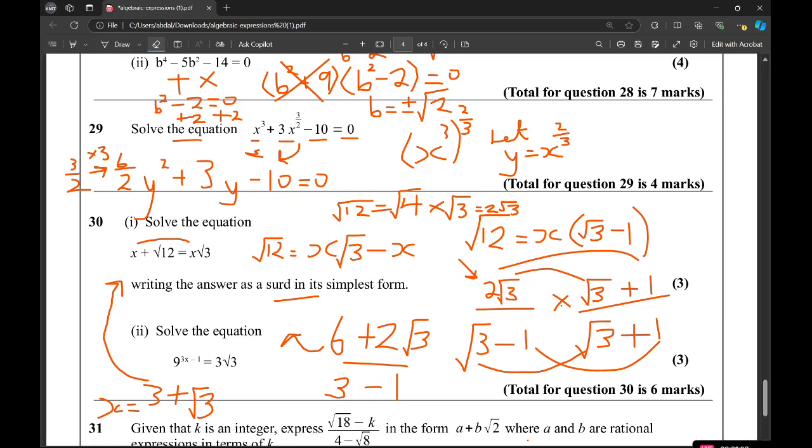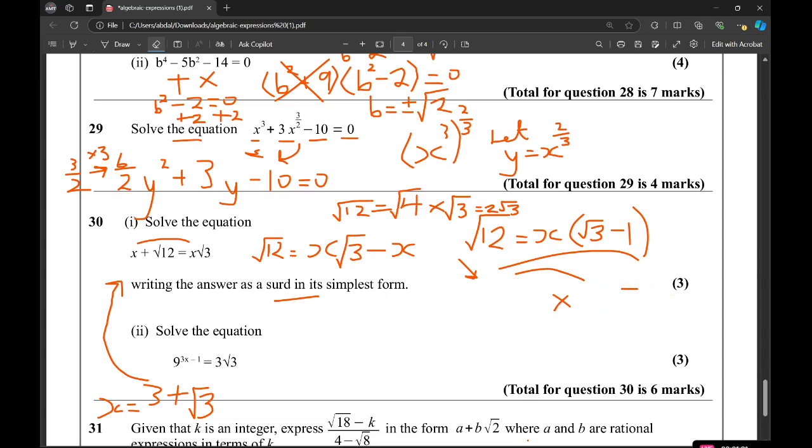Let us try part i. So, what do we have here? We're asked to solve the equation 9 to the power of 3x minus 1 equals 3 root 3. So write this as a power of 3. That would be 3 squared.